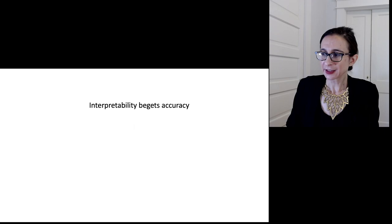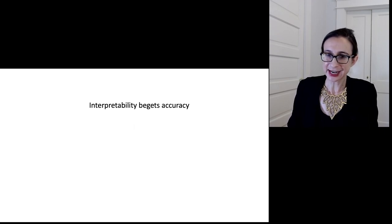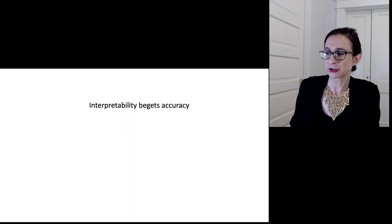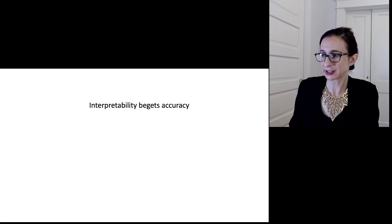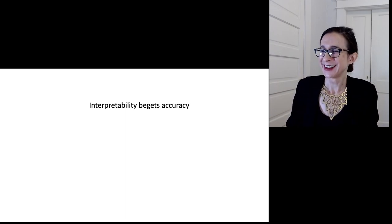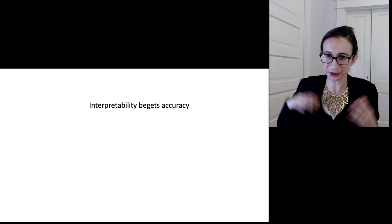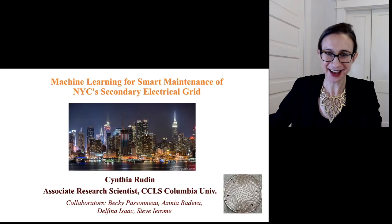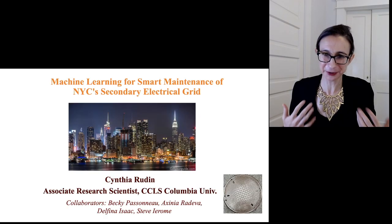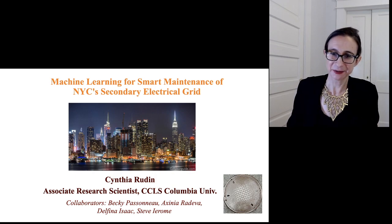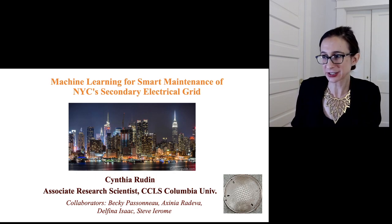A lot of people think we need to sacrifice accuracy to gain interpretability, but that's not actually true. In fact, the opposite is true — interpretability often leads to better accuracy, because if you can understand what's going on, you can do a better job. You can troubleshoot more easily and get an overall better system. I want to give you an example of that — the first major project I ever worked on, when I was at Columbia University working with Con Edison engineers on maintaining New York City's power grid.